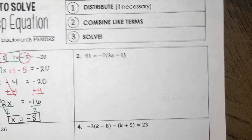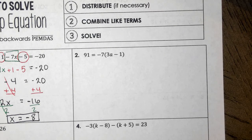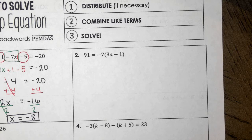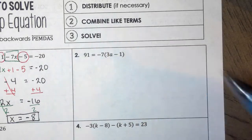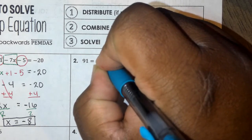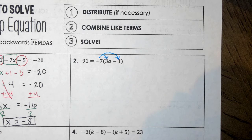Moving on to number two. On this next equation, we only have one variable, but it's on the right, and we also have parentheses, so distribution is necessary. The equation is 91 = -7(3a - 1). The first thing we want to do is distribute this -7 into the parentheses to the 3a and the -1 — both terms get it.